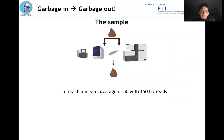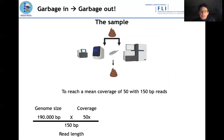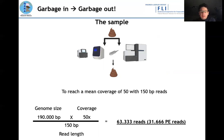To give you an idea — if you want to reach a mean coverage per nucleotide of an ASF genome of around 50x, which is a relatively good and trustworthy coverage, with 150 base pairs per read as Illumina platforms typically produce — you multiply the genome size by the coverage of 50, divide by the read length of 150 base pairs, and you get around 63,000 reads pure ASF reads necessary per sample. For paired-end reads with no overlap, around 31,000 reads are necessary to reach coverage of 50.